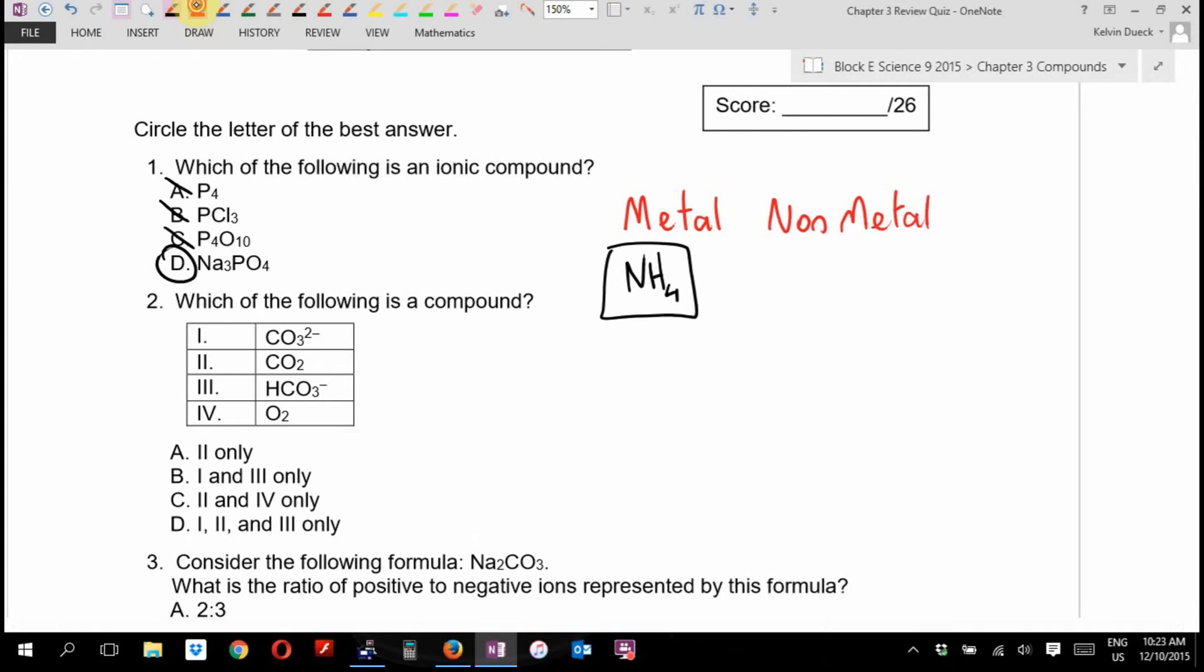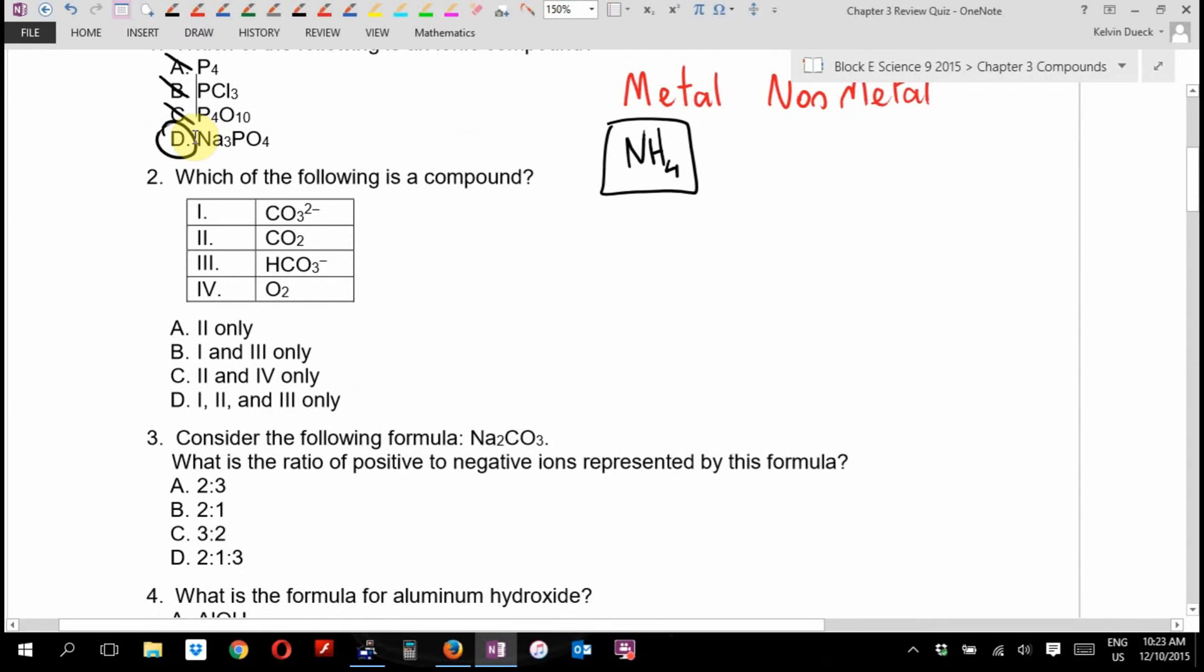You'll notice I use my typical process of elimination on the multiple choice section. Which of the following is a compound? A compound is going to have more than one element. That is not a compound, that's a diatomic molecule. It doesn't have more than one element. These are polyatomic ions and they are compounds. So I think here the answer is one, two, and three only, because the definition of a compound doesn't say that it has to be neutral.